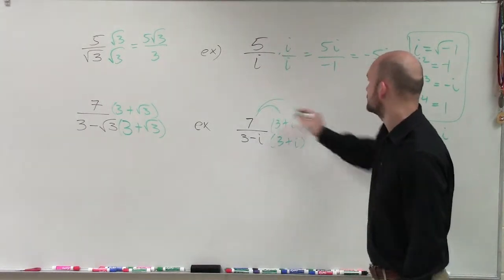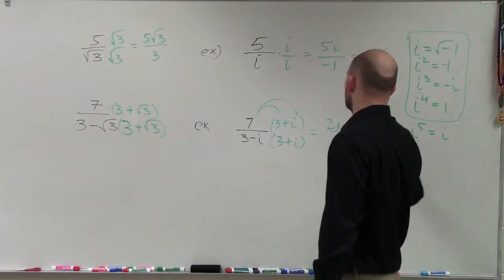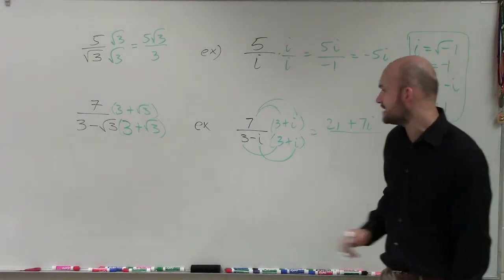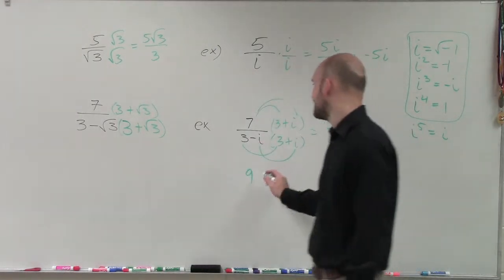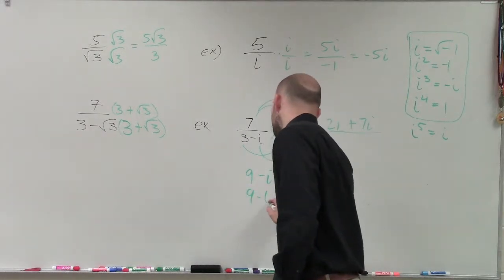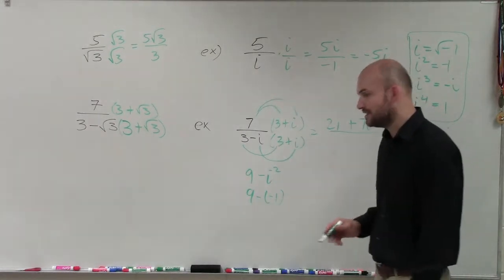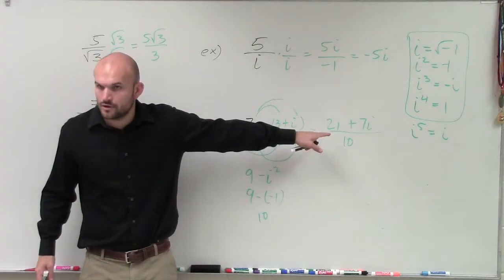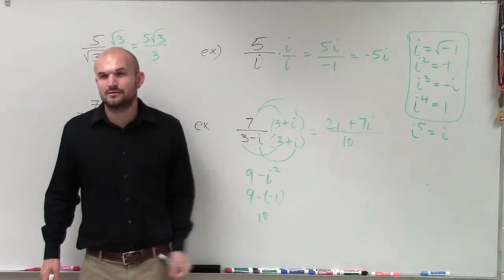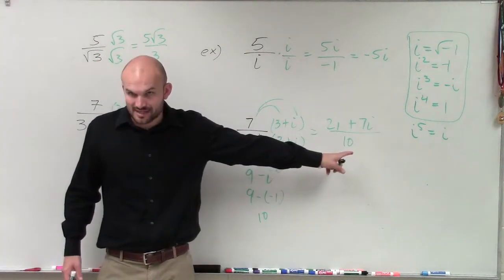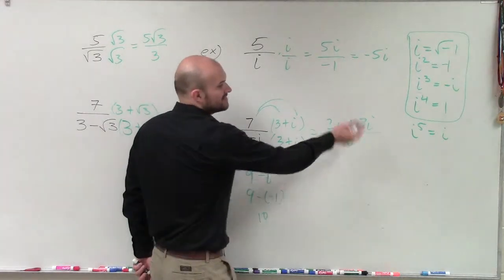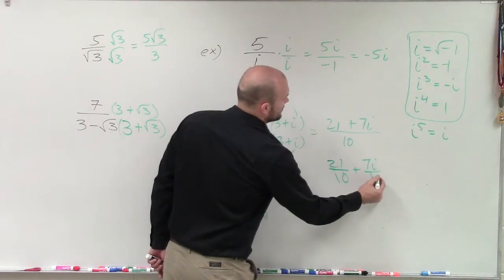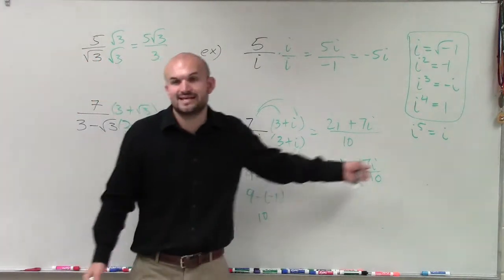Multiplying 7 over (3 minus i) by (3 plus i) over (3 plus i): on the top, we get 21 plus 7i. On the bottom, using difference of two squares, the middle terms cancel. Three times three is 9, and negative i times negative i is negative i squared. Since i squared equals negative 1, nine minus negative 1 gives 10. So we have (21 plus 7i) over 10. Writing in a plus bi form: 21 over 10 plus 7i over 10. That's our review of everything you need for complex numbers.